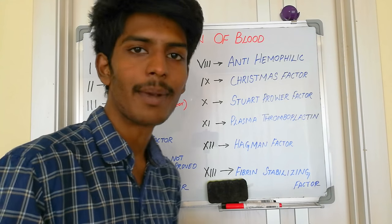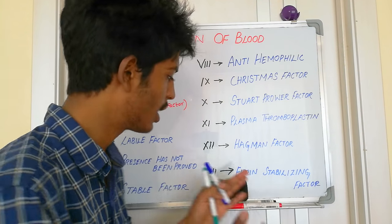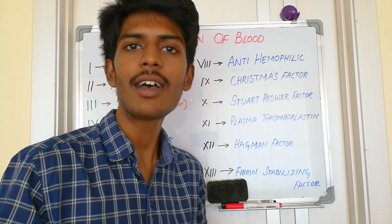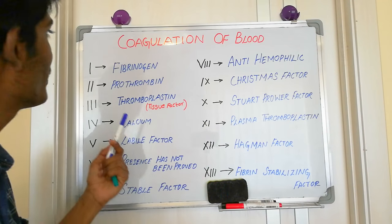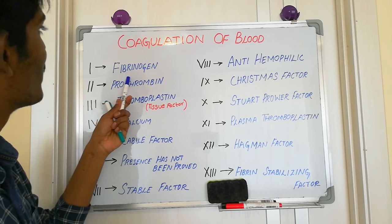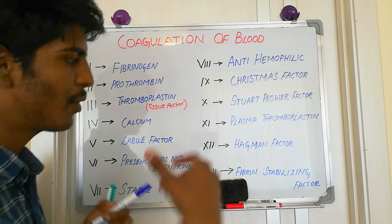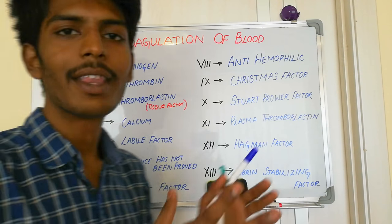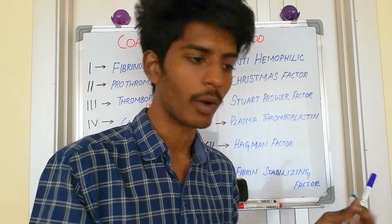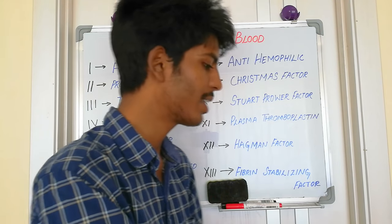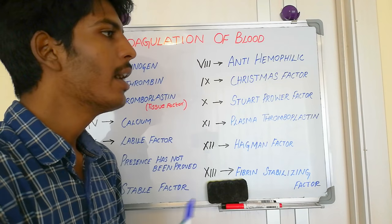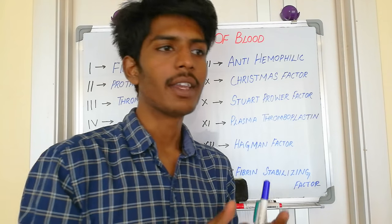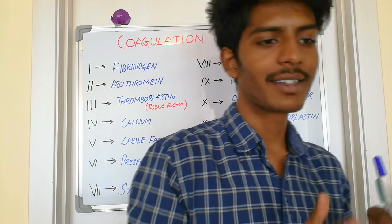Factor 12 is Hagman's factor. Factor 13 is fibrin stabilizing factor — the name itself says it stabilizes fibrin. Fibrinogen must convert into fibrin, which then forms the clot. Coagulation happens via two pathways: the extrinsic pathway and the intrinsic pathway.